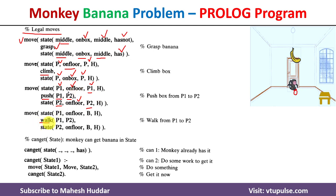The last legal move is walk. Whenever a monkey wants to go from one position to another, we do not care about the box or whether the monkey has the banana. We care only about the initial position and whether the monkey is present on the floor. Whenever it executes a walk from P1 to P2, it will go from P1 to P2 and still be present on the floor. These are the four legal moves in the monkey-banana problem.